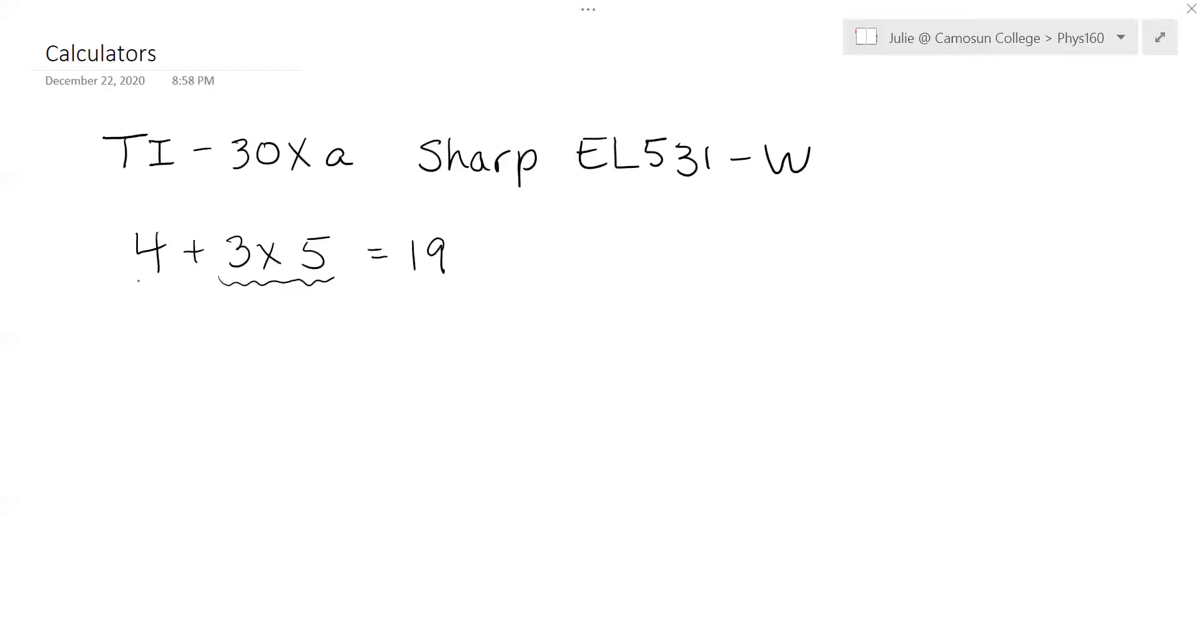If in fact you wanted it to do the four plus three first, you would have to force it with brackets. And that would then force your calculator to add four plus three and then multiply by five to get 35. So if it's okay to do the multiplication first, then you don't need the brackets.